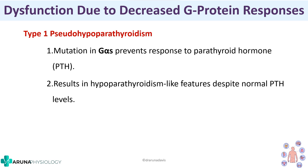There can also be dysfunction due to decreased G-protein response. A good example is pseudohypoparathyroidism type 1, in which the G-protein response to parathyroid hormone is reduced. The hormone is present but the effect is absent, so patients can have hyperparathyroidism-like features despite normal PTH levels. These are examples of how G-protein dysfunction causes disease.